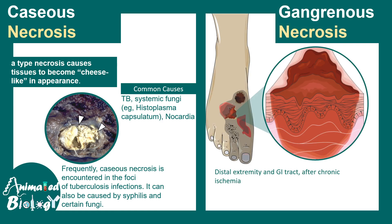Gangrenous necrosis most commonly affects the distal extremities and GI tract, where blood flow stops and leads to necrosis of that region. Clostridial myonecrosis is a prominent feature of Clostridium infection.